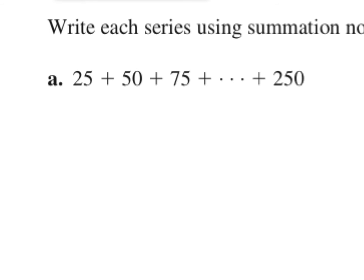Write each series using summation notation. The first thing we want to do is figure out what our equation is going to be. This is our first term, this is our second term, this is our third. We don't know what term 250 is, but we do have an ending point, so this is not an infinite problem. What is the relationship between the term number and each number here? What do we have to do to 1 to get to 25?